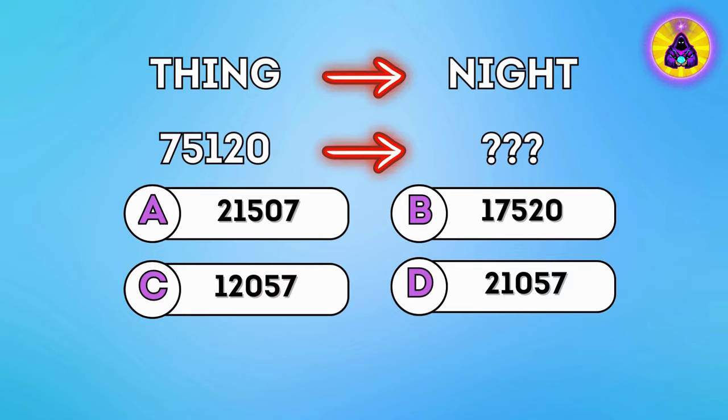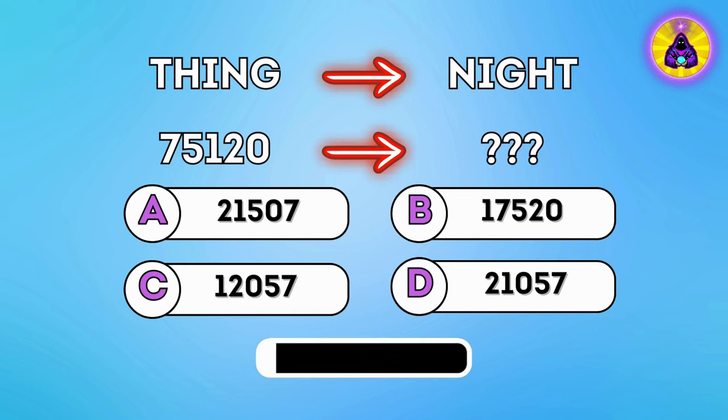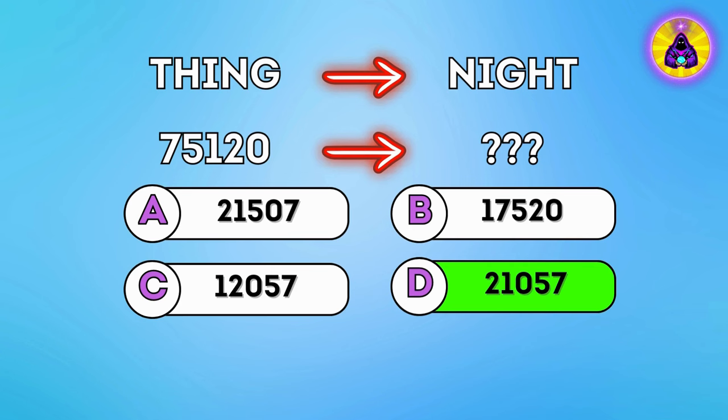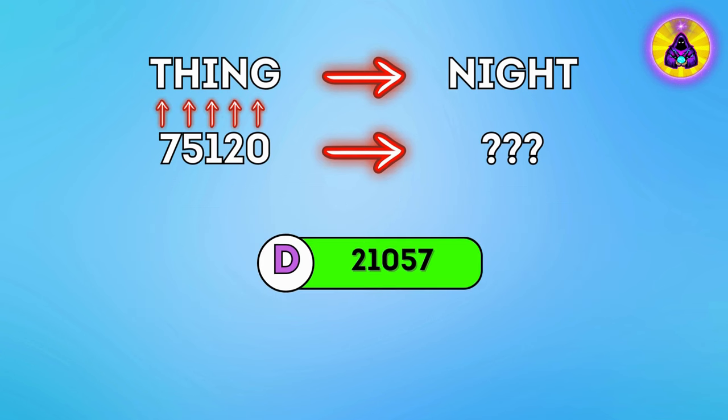Question 11. Can you solve this puzzle? Correct answer is D. 21,057. Each letter has its own number. You just put numbers in order.